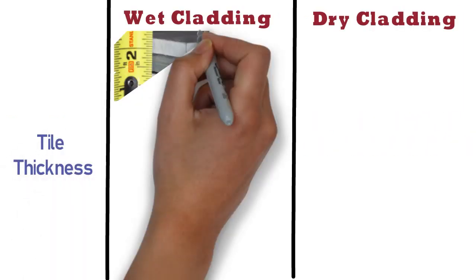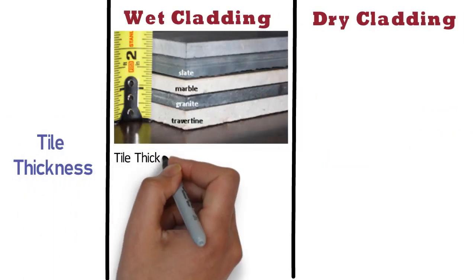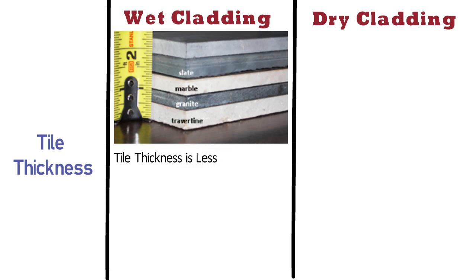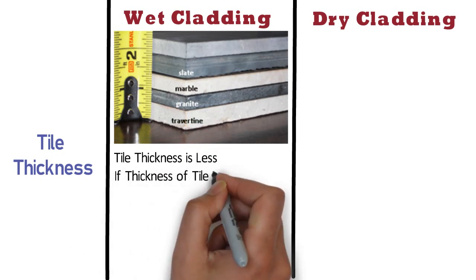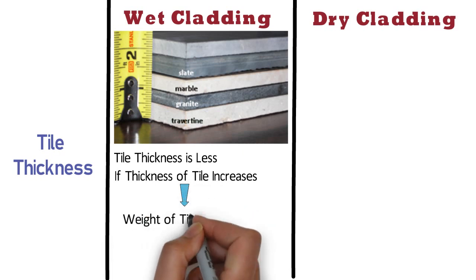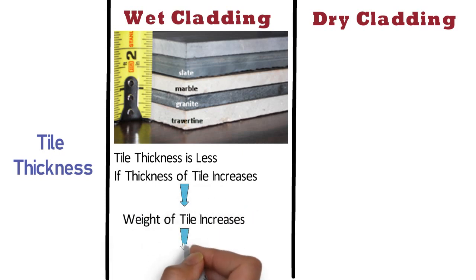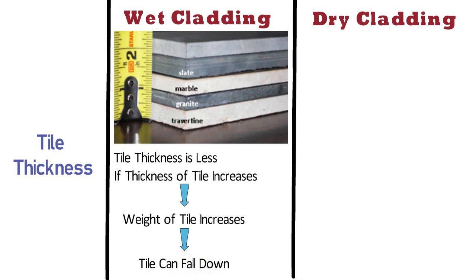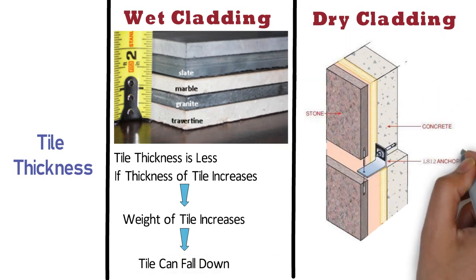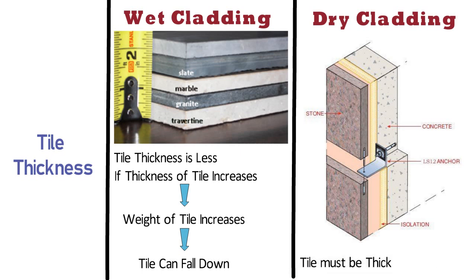Tile thickness: In case of wet cladding, the tile thickness is less as compared to dry cladding. The reason is, if we increase the thickness of the tile, the weight of the tile also increases, and due to this, the tile or stone can fall down. On the other hand, the stone required for dry cladding must be thick, because this method requires holes to be drilled and mechanical ties or anchors to be used, which could increase the occurrence of cracks.